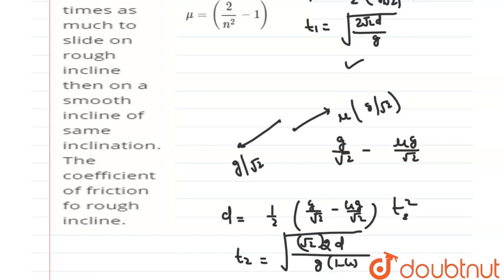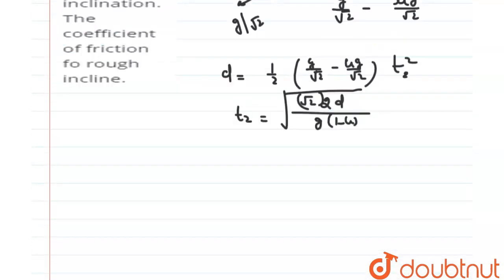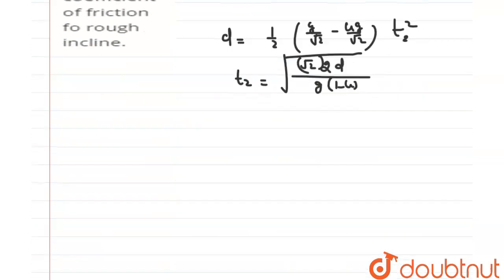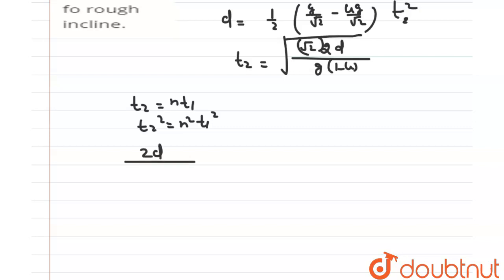The question gives a relation between t1 and t2: t2 = n·t1. This makes sense because friction slows the block down, so it takes more time. Squaring both sides: t2² = n²·t1². Substituting the expressions for t1² and t2²: 2d/(g/√2 · (1−μ)) = n² · 2d/(g/√2).